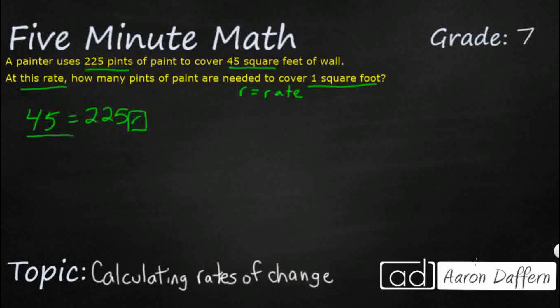So if we want to figure out what this rate is of how much paint does it actually take to cover one square foot, we need to isolate that variable. And so we're going to divide both sides by 225.